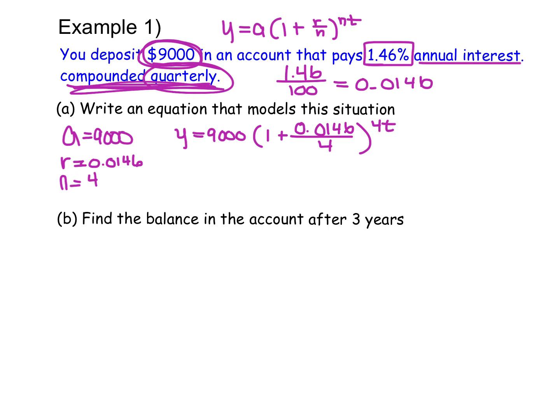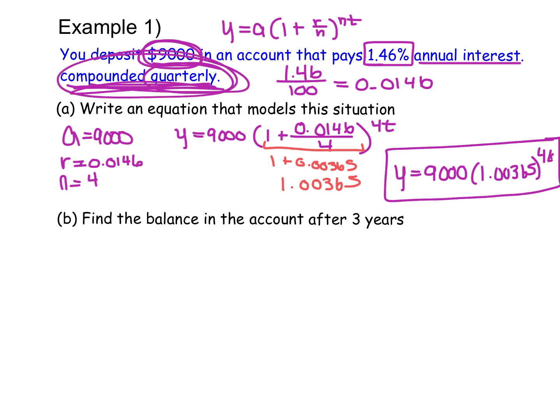While this is the basic equation, I do want to simplify this part a little bit further. So if I take 0.0146 and divide it by 4, I end up with 1 plus 0.00365. So I'm going to rewrite this equation as Y equals 9,000 times (1.00365) to the power of 4 times T. So there is my equation. Key details that told us how to use this equation were the compounded quarterly, because we had an N value equal to 4, and the fact that we had annual interest over here. We need that R value to be annual.